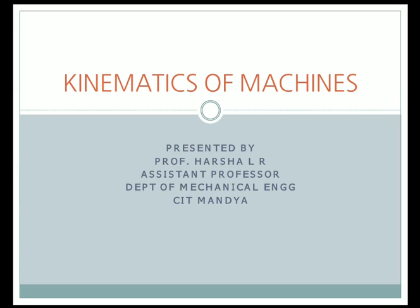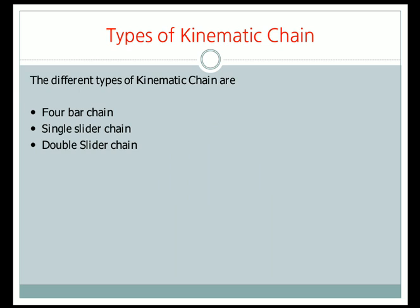Good morning students. Today we shall discuss the different types of kinematic chain. The different types of kinematic chain are 4-bar chain, single slider chain, and double slider chain. We shall see in detail what each one is.